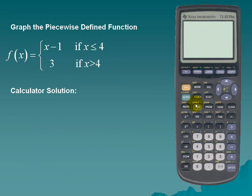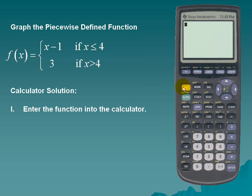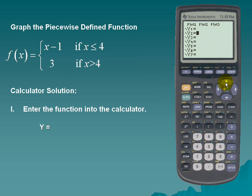Let's take a look at another example. We'll graph the piecewise function: f(x) = x minus 1 if x is less than or equal to 4, and f(x) = 3 if x is greater than 4. Once again we'll enter the Y= section and clear out our functions. Note that clearing the functions resets the calculator to the default connected mode, so we'll enter our piecewise function in a set of parentheses.